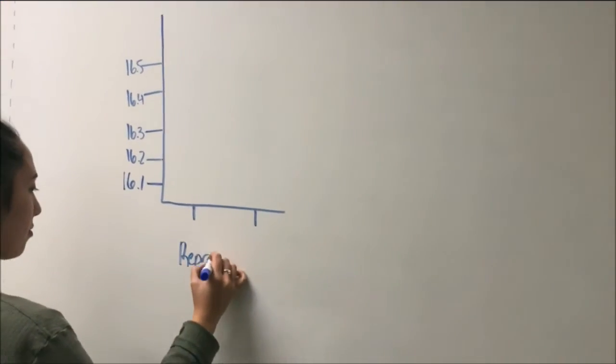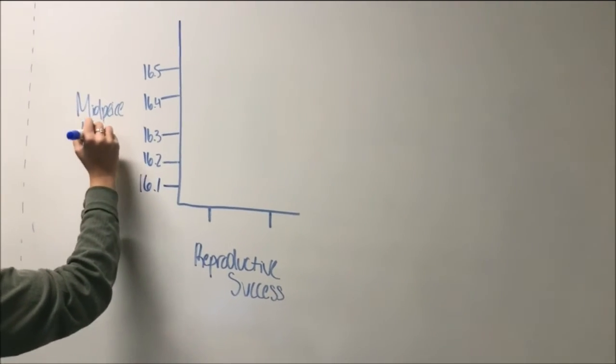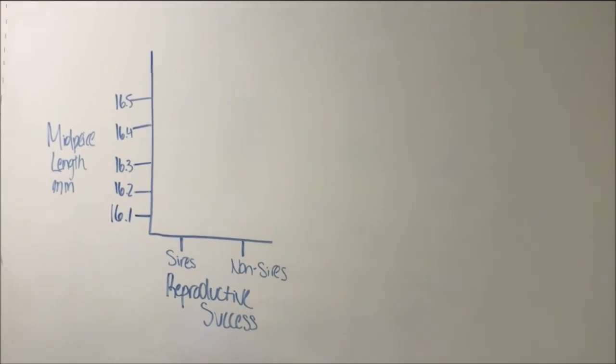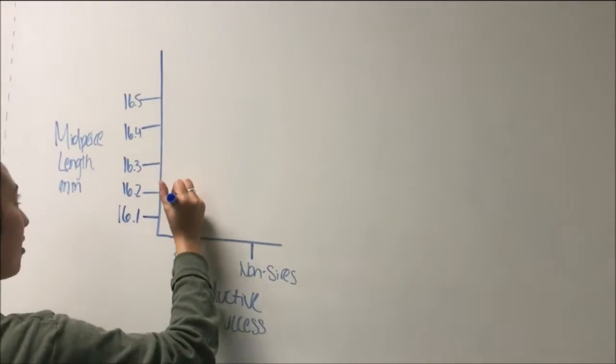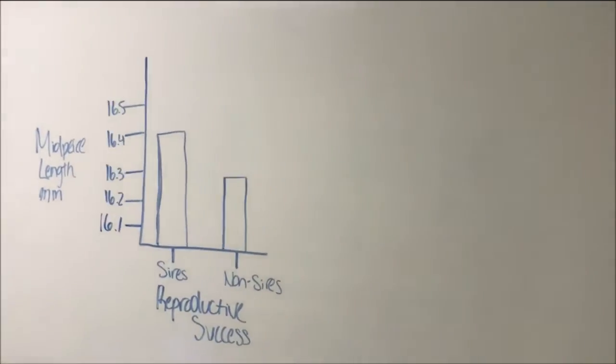To analyze the reproductive success of the F2 males, the 300 of them that were allowed to reproduce again were separated into those that produced offspring and those that did not. The midpiece length of the sperm of these F2 males were measured after they were killed and the mean length was plotted for the two groups of mice to compare midpiece length to reproductive success.